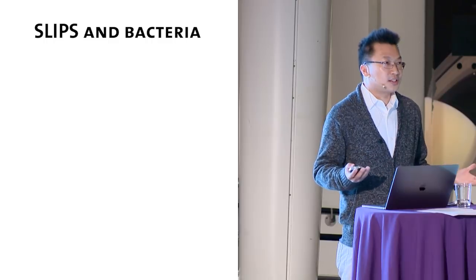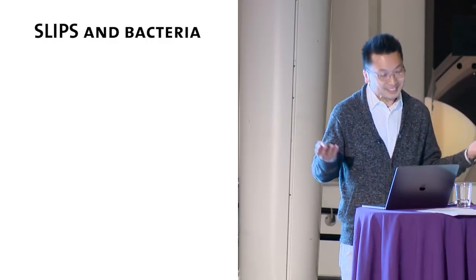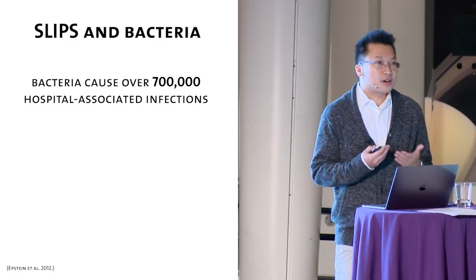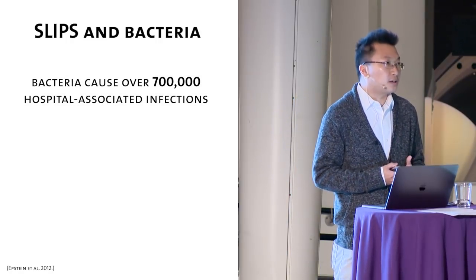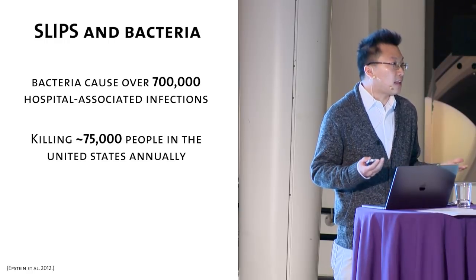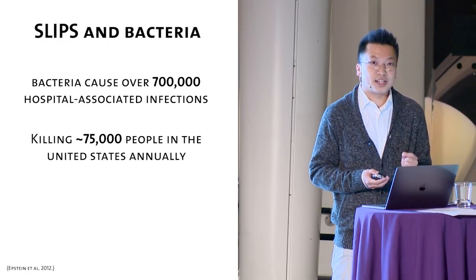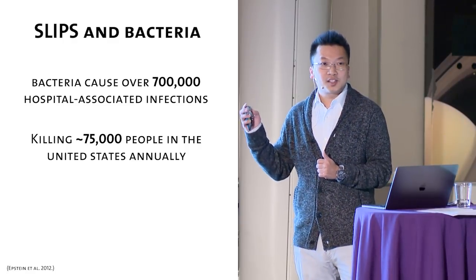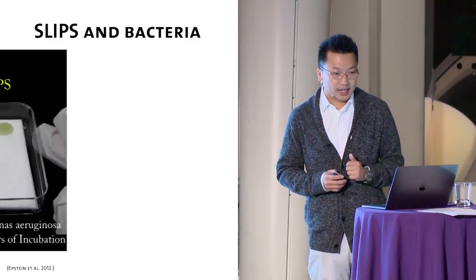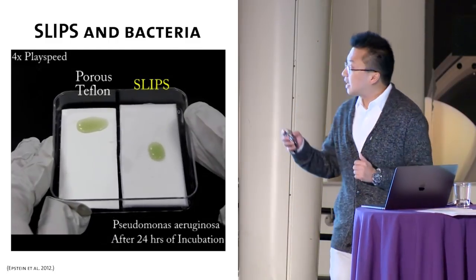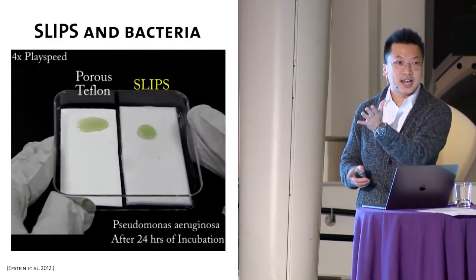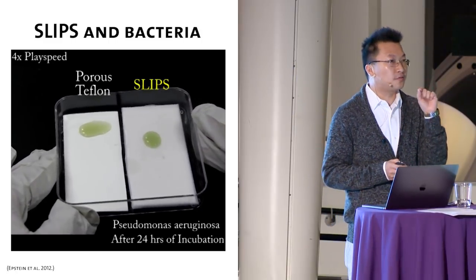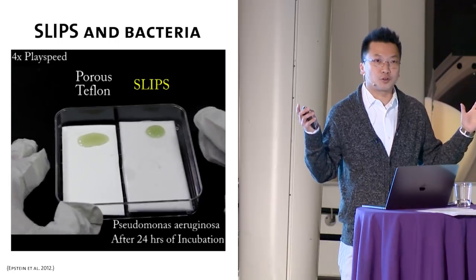I think many of us don't like bacteria, right? Because they cause a lot of problems. Indeed, bacteria cause over 700,000 hospital-related infections, which kills about 75,000 people just in the United States per year. So, this is bad. And we can engineer slips such that it is bacterial repellent. In this video, again, on the left-hand side, we use Teflon as a control, and on the right-hand side, it's slips. We put two drops of bacteria solution and let them sit there for 24 hours.